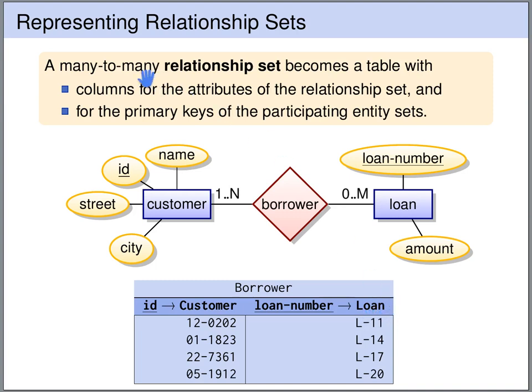This slide shows the translation for a many-to-many relationship set, but in general we can use this translation for arbitrary relationship sets. However, we will later see that depending on the cardinality limits, we might want to choose a slightly different translation to enforce these cardinality limits by the design of the database schema.